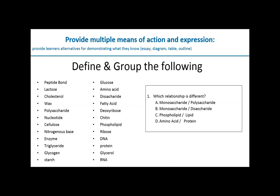The next is multiple means of action and expression — giving students options in how they demonstrate what they know. One of the concepts we cover in our course is chemistry, specifically the four broad groups of chemicals of life. The terms I would use in the lecture are all on the left side of the slide, and on the right in the box is how I used to test this. It was one of my favorite test questions because it really requires application and analysis — asking students to compare two different chemicals across those four groupings and identify which grouping is different.